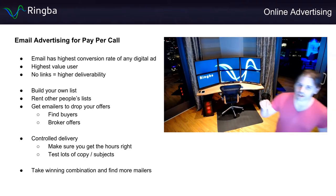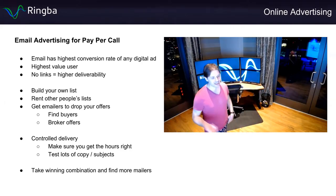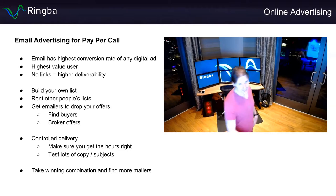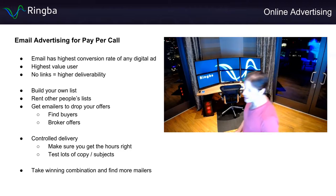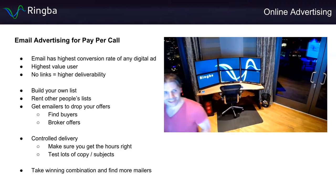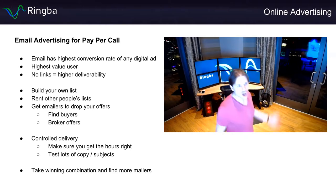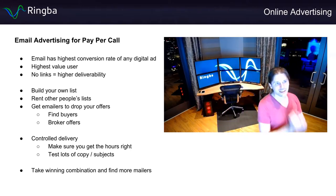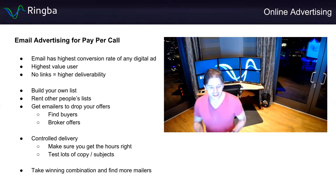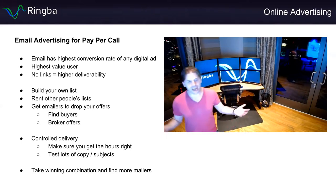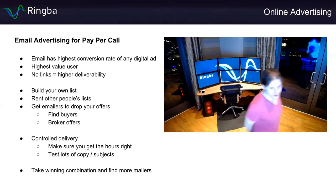You can use high-quality email delivery services like Mailchimp, AWeber, Constant Contact, ActiveCampaign, or ConvertKit. Most of these companies don't allow affiliate marketing campaigns and monitor for links — but they don't monitor for pay-per-call campaigns because it's a phone number, not a link, and it doesn't affect deliverability. So you can build lists and email them using guaranteed-inbox delivery services, put phone numbers in those links, and run pay-per-call campaigns.